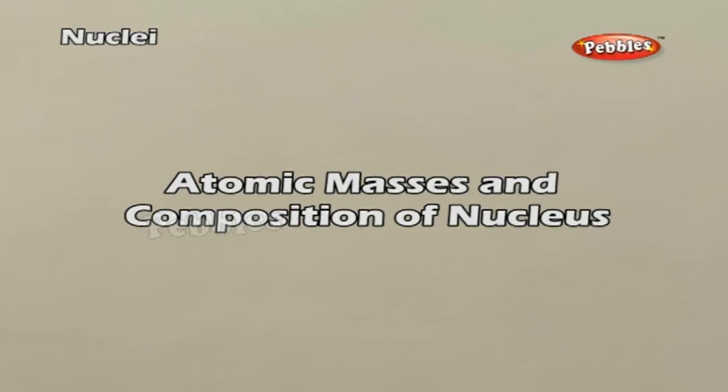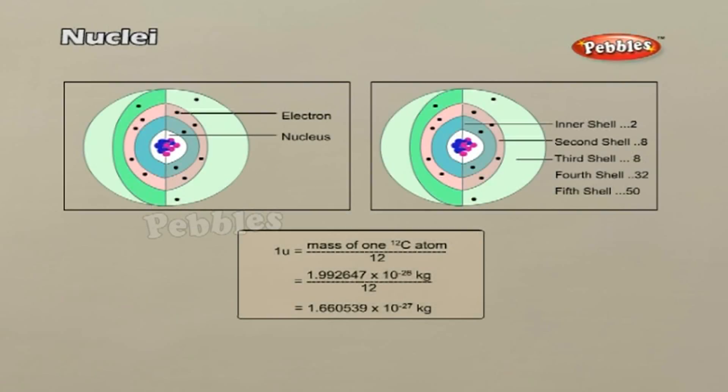Atomic masses and composition of nucleus. The mass of an atom is very small compared to a kilogram. For example, the mass of a carbon atom that is 12C is 1.992647 into 10 to the power minus 26 kg. Kilogram is not a very convenient unit to measure such small quantities. Therefore, a different mass unit is used for expressing atomic masses. This unit is the atomic mass unit or the AMU, defined as one twelfth of the mass of a carbon that is 12C atom. According to this definition, the equations are shown above.